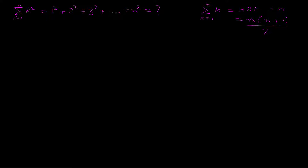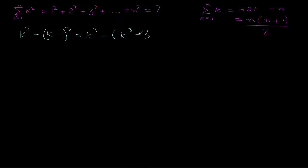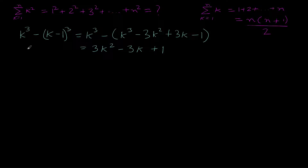There is a little trick to start with, and once we go through it you will understand why we did this. If we start with the expression k³ minus (k−1)³ and evaluate it — using a³ minus b³ expansion — we get k³ minus (3k² − 3k + 1), and the k³ terms cancel, leaving us with 3k² minus 3k plus 1. So k³ − (k−1)³ equals 3k² − 3k + 1.